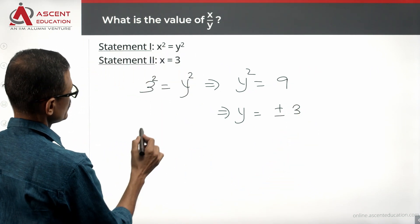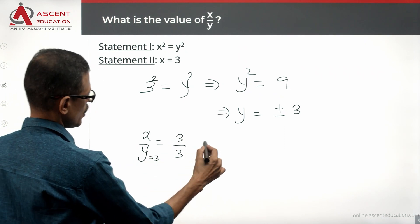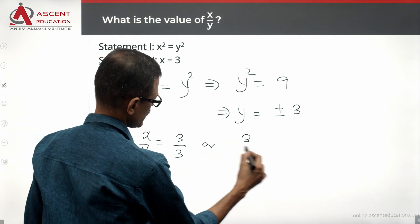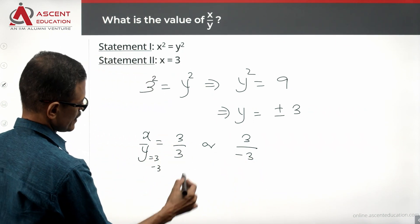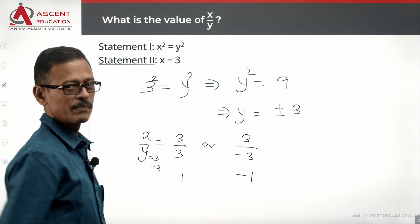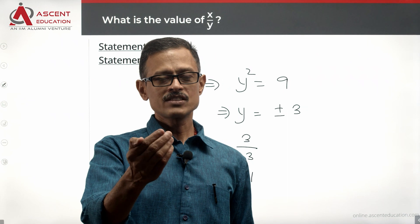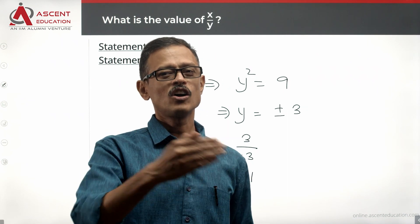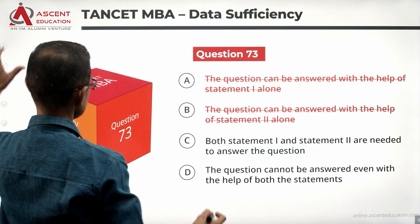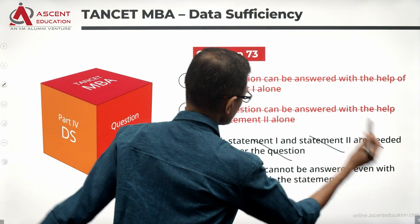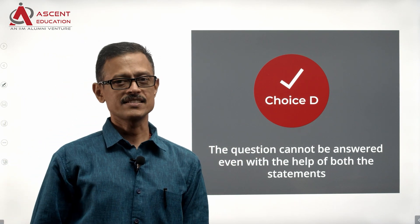x equals 3. If y is 3, then x by y equals 3 by 3, which is 1. Or x by y equals 3 by minus 3 if y happens to be minus 3, which is minus 1. Despite combining the statements, we could get an answer for x by y which could either be 1 or minus 1. We are not getting a unique answer by combining the two statements. Statements together are not sufficient. We need additional data, so the answer is choice D. Data is insufficient is the correct answer.